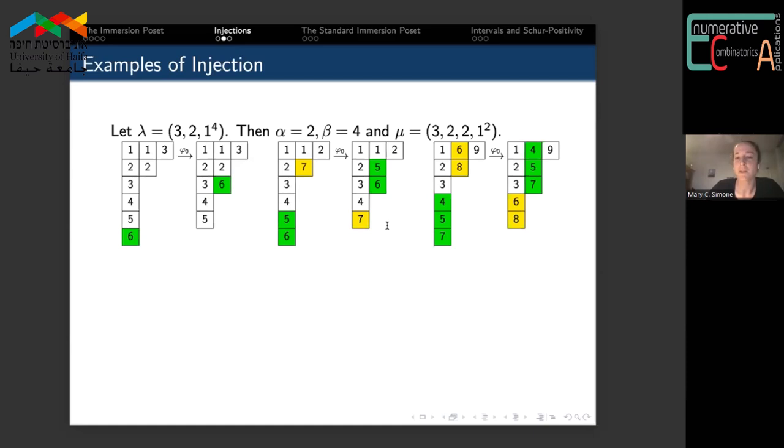Then the final possibility is that there's no such corresponding entries in column c and c plus one that would maintain semi-standardness. If that's the case, we will swap all of the boxes and content in column c plus one with the appropriate number of boxes and content in column c. Throughout this process, we've maintained semi-standardness in rows because of our conditions on β and α so that we don't create any sort of overlapping scenarios.